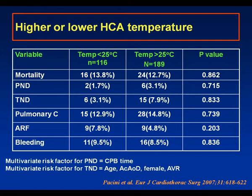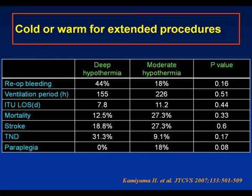Looking back at the Hanover data, there are two striking differences between the deep and moderate hypothermia groups. One is the rate of reoperation for bleeding with deep hypothermia; the other significant finding was that with warmer temperatures the paraplegia rate appeared to increase.